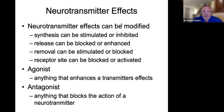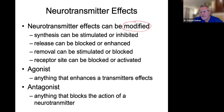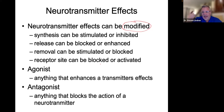Neurotransmitters and their effects can be manipulated or modified. They can be modified by vitamins, by minerals, by herbs, by medications, pharmaceuticals. There are lots of different ways of enhancing, inhibiting, or manipulating neurotransmitters' effects.